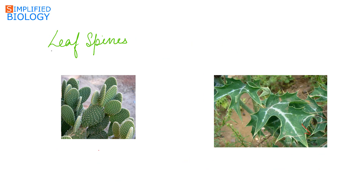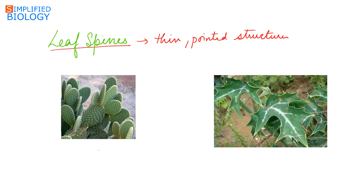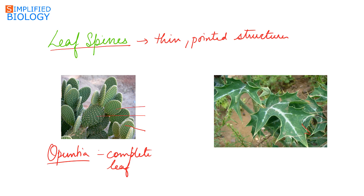Next, leaf spines. In this, the complete leaf or any part of the leaf gets modified into thin pointed structures. In case of Opuntia, that is cactus, the complete leaf gets modified into spines, as seen in this figure. These spines reduce transpiration and protect the plant from grazing animals.